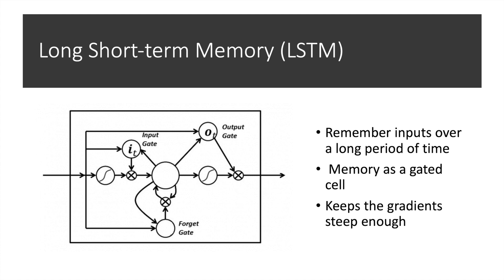In an LSTM you have three different gates: input, forget, and output. These gates determine whether to let new input in (input gate), delete information because it isn't important (forget gate), or let it impact the output at the current timestamp (output gate). The gates in an LSTM are analog in the form of sigmoids, ranging from 0 to 1, which enables backpropagation. The problematic issue of vanishing gradients is solved through LSTM because it keeps the gradient steep enough, which keeps training relatively short and with high accuracy.